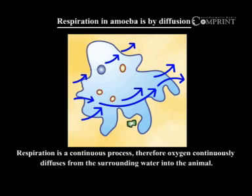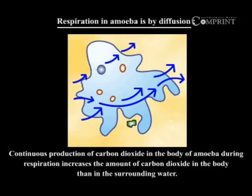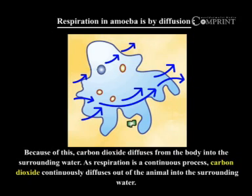Respiration is a continuous process, therefore oxygen continuously diffuses from the surrounding water into the animal. Continuous production of carbon dioxide in the body of amoeba during respiration increases the amount of carbon dioxide in the body compared to the surrounding water. Because of this, carbon dioxide diffuses from the body into the surrounding water, and as respiration is a continuous process, carbon dioxide continuously diffuses out of the animal into the surrounding water.